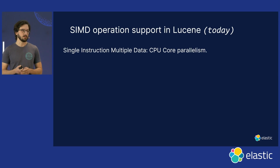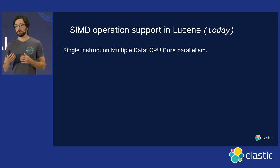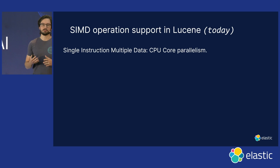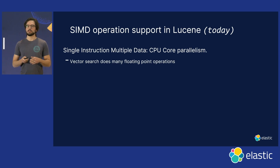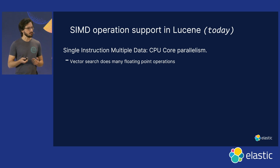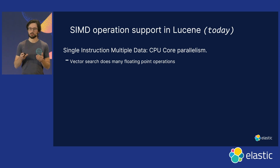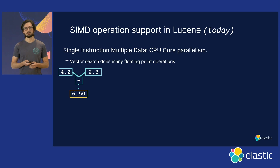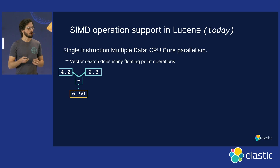Thank you, Jim. I'm going to talk about some of the recent advancements and some of the things we're working on now. One thing available today is SIMD operations inside vector search. SIMD means single instruction, multiple data — you can do one arithmetic or specialized linear algebra calculation over multiple dimensions of data in a single CPU cycle. This is important for vector search particularly because we do a lot of repetitive calculations, especially for dot product, which involves many floating point multiplications and summations.